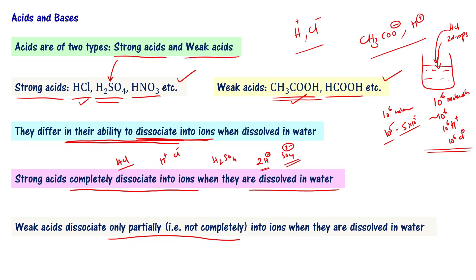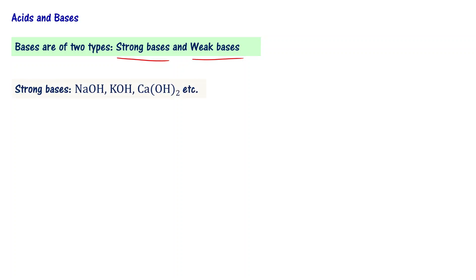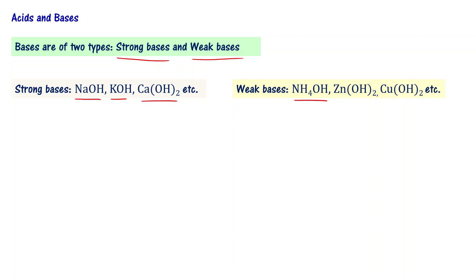The same is true with bases. Bases are also of two types: strong bases and weak bases. Strong bases include sodium hydroxide, potassium hydroxide, and calcium hydroxide. Weak bases include ammonium hydroxide, zinc hydroxide, and copper hydroxide — these are a few examples of weak bases.